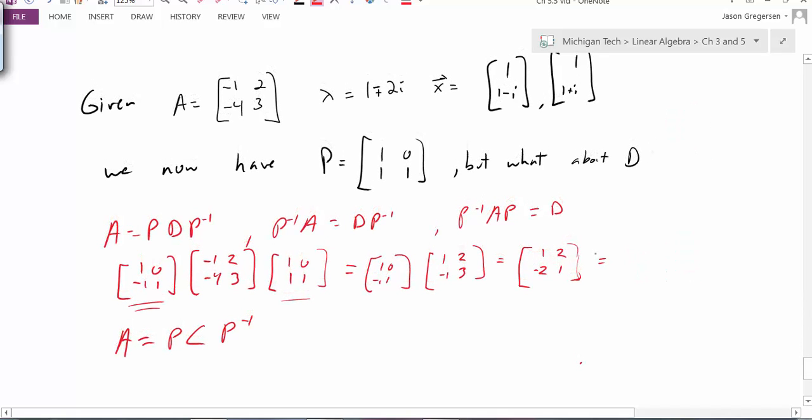But it turns out this isn't any rotational matrix. It turns out that these values, 1 and 2 and negative 2 and 1, these are really just the real and imaginary parts of my eigenvalues.